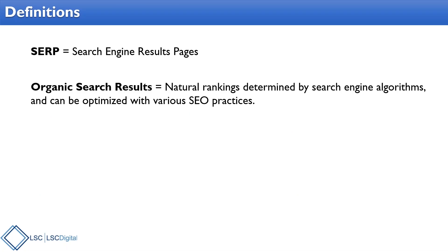We're really going to be talking a lot about two types of traffic. Organic search results — those are the natural rankings. You don't pay for those. Those are based off the algorithms that say this is the best piece of content for this search that's being done. And you don't pay for those directly.